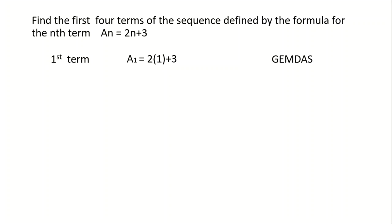Remember GEMDAS: grouping, exponent, multiplication, division, before addition. So in this case, let's multiply 2 and 1 before we add 3. So 2 times 1 is 2 plus 3, that will give us 5 as our first term.